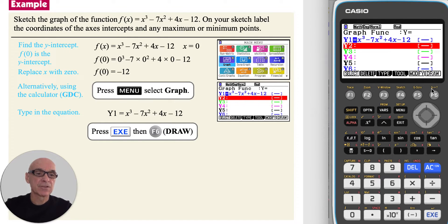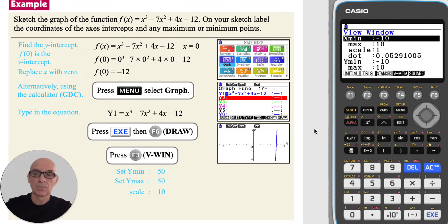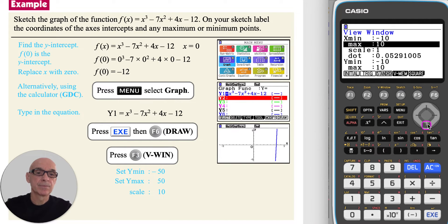Pressing execute to enter the equation, and then f6 to draw the graph of the function. As the graph is only partially visible, we need to adjust the window. Pressing f3 to access view window, scrolling down, and setting y min to negative 50. Pressing execute.